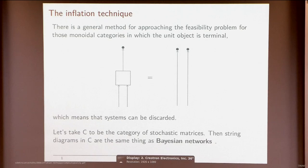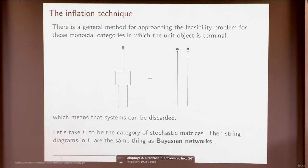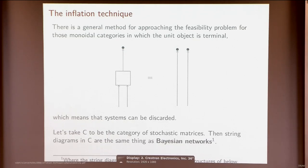In the particular case I'll illustrate with examples, the category C is the category of stochastic matrices, or stochastic maps between finite sets. String diagrams in C are basically the same thing as Bayesian networks — with a bit of a subtlety, which I'm slightly glossing over. This was actually worked out in detail by Brendan.